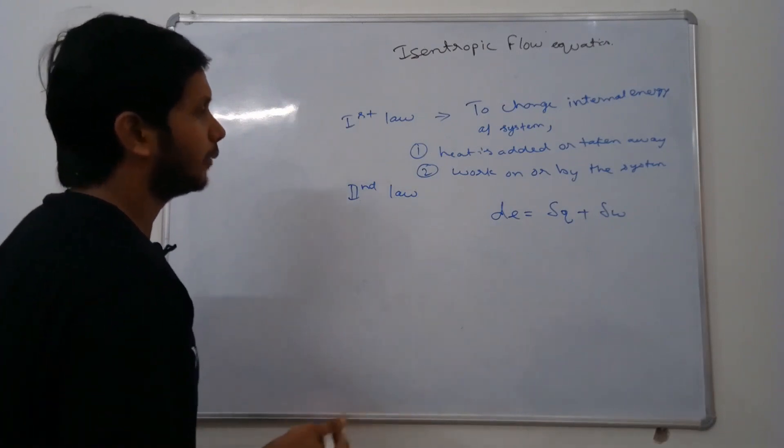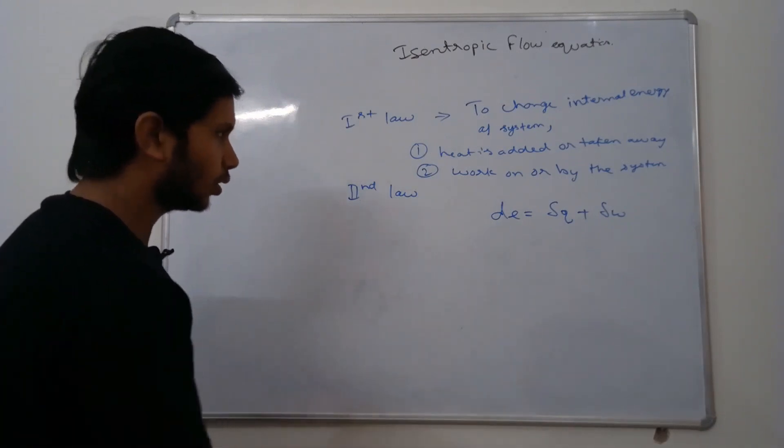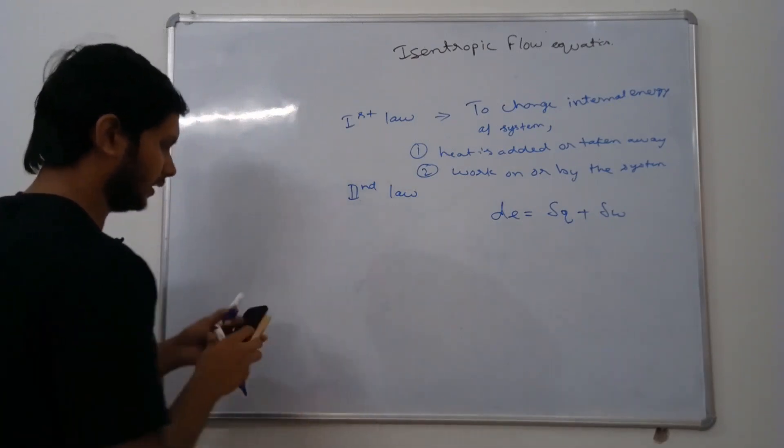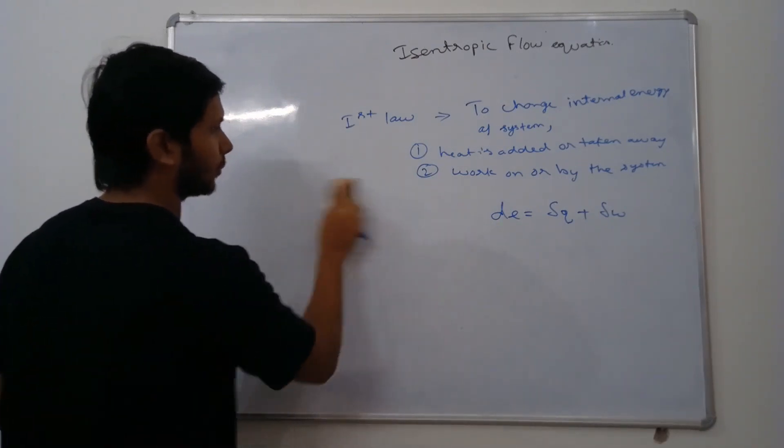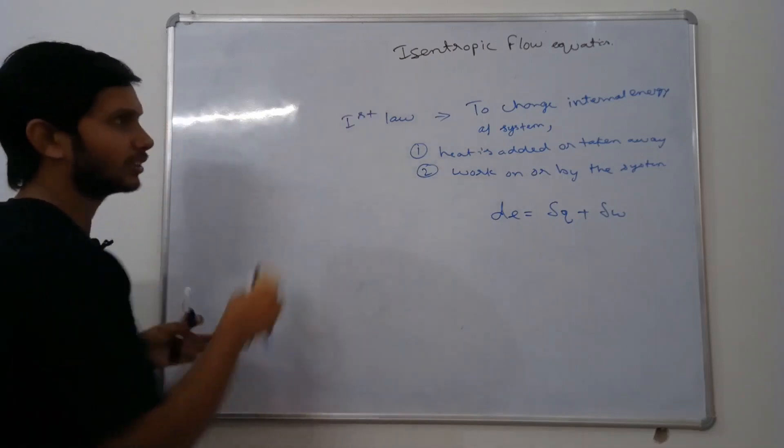Now there are two other equations from the second law. We will see where entropy starts and what is happening.